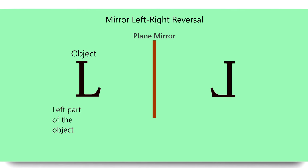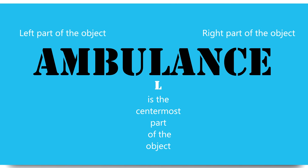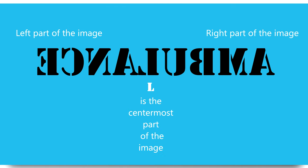The image is reversed, or in lateral inversion. It means that the left part of the object becomes the right part of the image, and the right part of the object becomes the left part of the image. The centermost part of the object does not change — the centermost part of the object is also the centermost part of the image. So we go back to our previous question: how is the word ambulance written on an ambulance car?